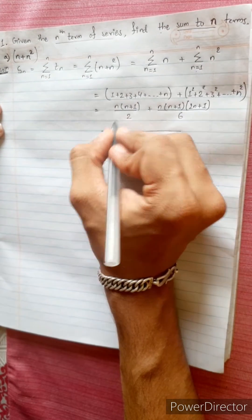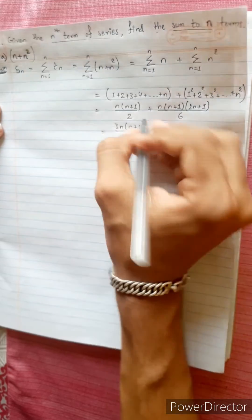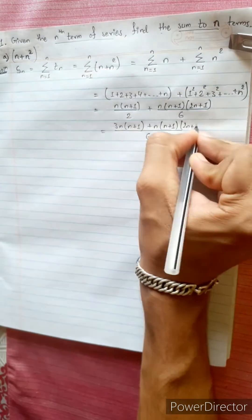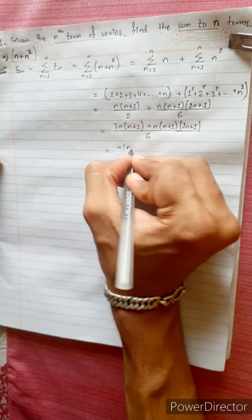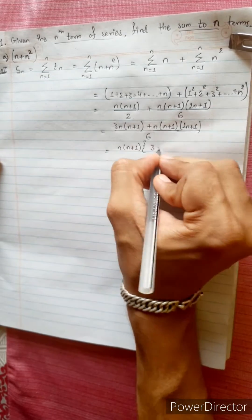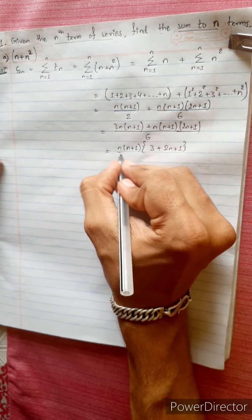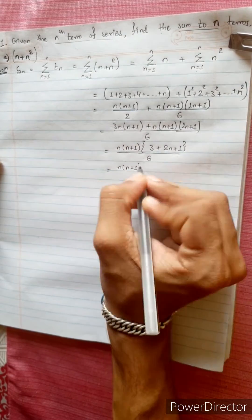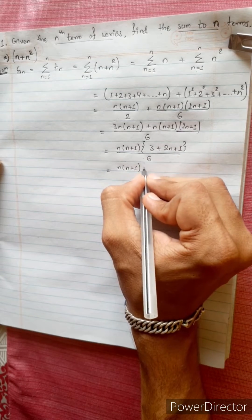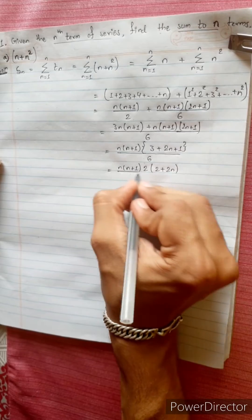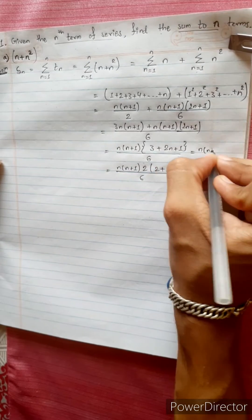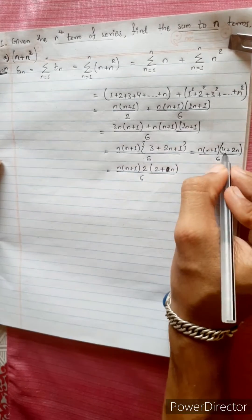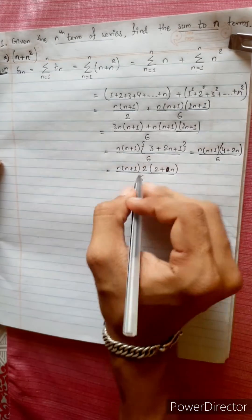Taking LCM of 2 and 6, which is 6: we get 3·n(n+1) plus n(n+1)(2n+1), all divided by 6. Taking n(n+1) common: n(n+1)[3 + (2n+1)] divided by 6, which simplifies to n(n+1)(2n+4) divided by 6. Taking 2 common from (2n+4) gives 2(n+2), so we have n(n+1)·2(n+2) divided by 6.